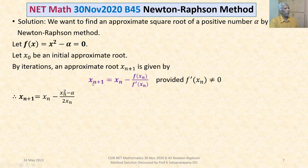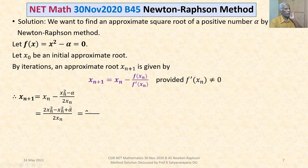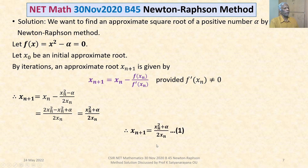Therefore, Xn+1 = Xn − (Xn² − alpha) / (2·Xn). Taking the LCM, we get Xn+1 = (2Xn² − Xn² + alpha) / (2Xn) = (Xn² + alpha) / (2Xn). Call this equation 1.